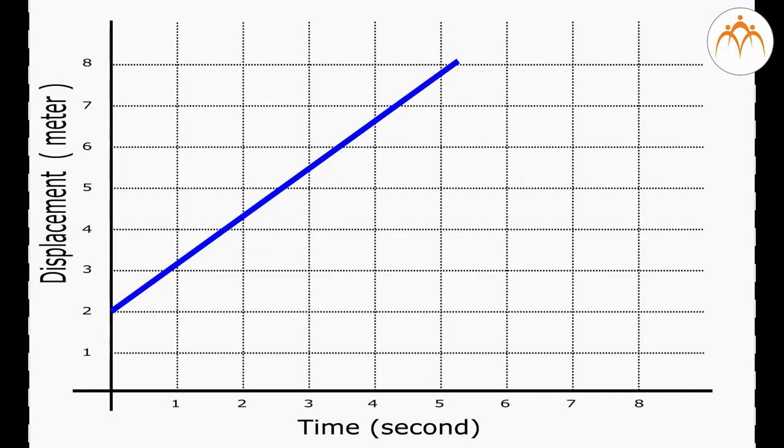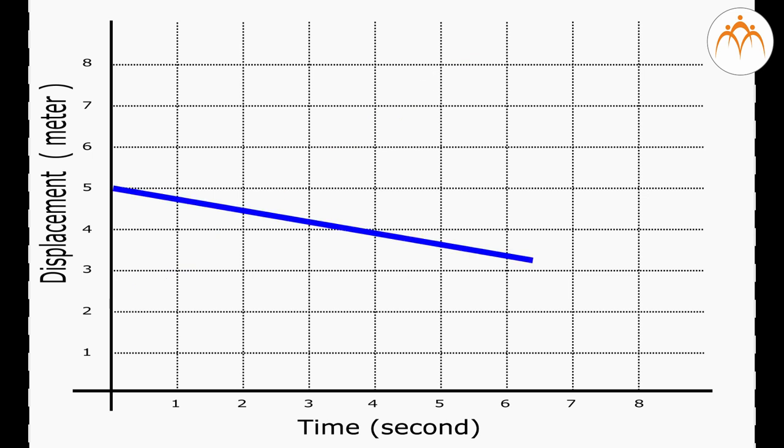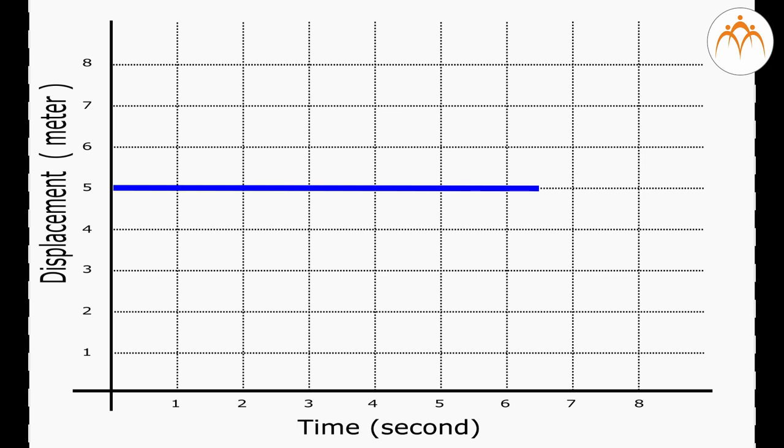A negative slope does not automatically mean driving backward, walking left, or falling down — the choice of signs is always arbitrary. All we can say in general is that when the slope is negative, the object is traveling in the negative direction. On a displacement-time graph: (1) positive slope implies motion in the positive direction; (2) negative slope implies motion in the negative direction; (3) zero slope implies the state of rest.